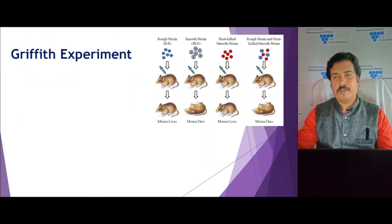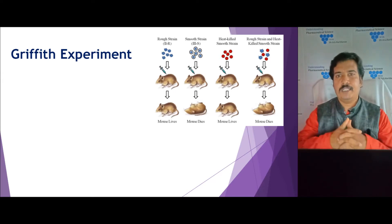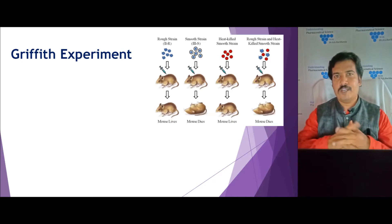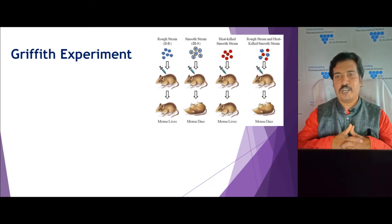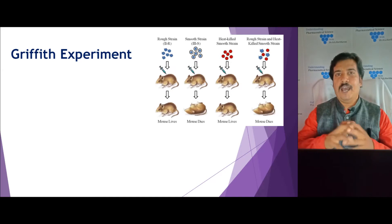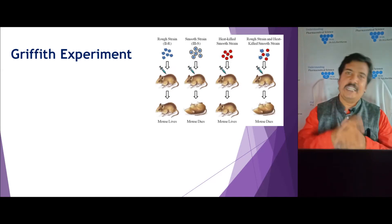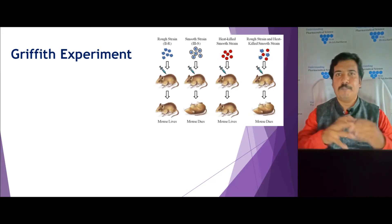In the Griffith experiment, he used four groups of mice. In the first group, he injected the rough strain, which is non-virulent — the mouse was alive. In the second group, he injected the smooth capsule-containing strain, which is virulent, and it caused death to the mice. In the third group, he heat-killed the smooth strain; since the bacteria were killed they could no longer cause infection, so the mice were alive.